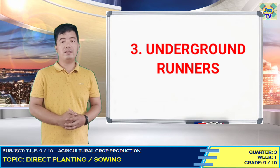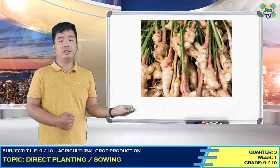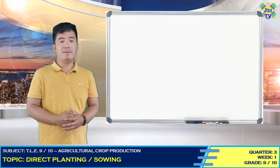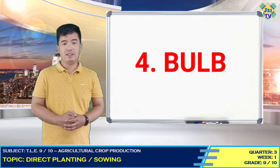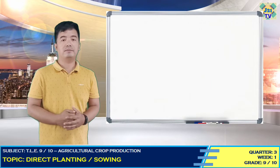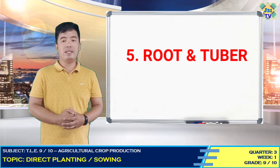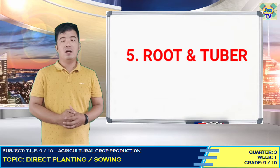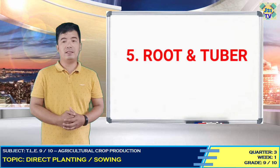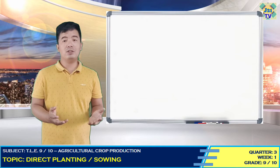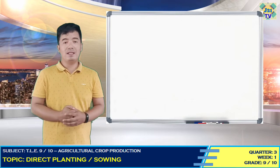Runners are usually set in hills and rows. Samples of these crops are roots, ginger, taro, and gum. Number four, the bulb portion of the plant is used as planting material — the sample is garlic. Number five, root and tuber: some crops are best propagated by the use of roots or tubers. The root or tuber is cut into halves or quarters, each section of which should have two or three aligned buds or eyes.